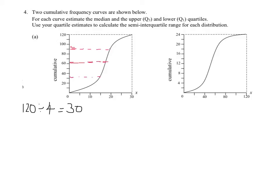And what I'm going to do is read the values of x at these three positions. I'm going to do that by coming down from where I hit the ogive. So at 30, I've hit here. If I come down, I can see that quartile 1 is approximately 15.